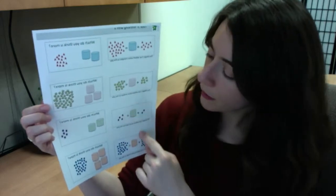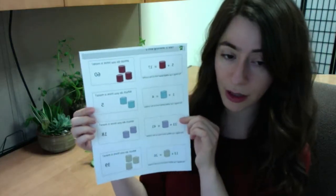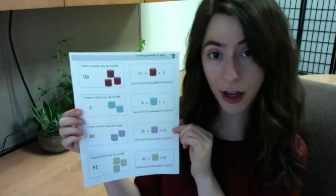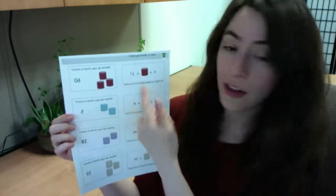So keep doing that for the entire page. On the next page, you'll see a really similar set up here. Very similar. But instead of objects, we'll have actual digits.